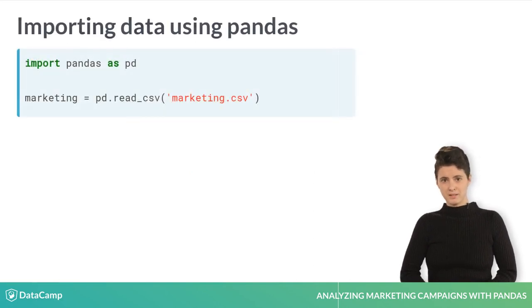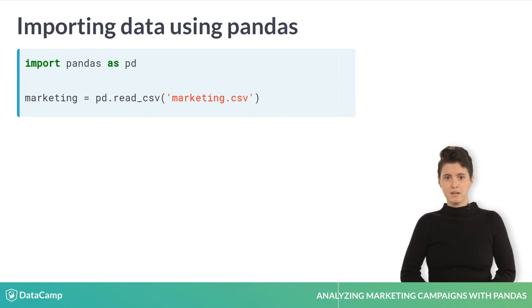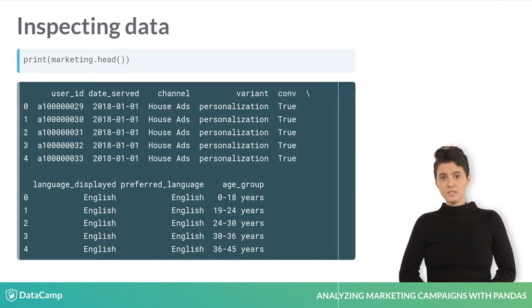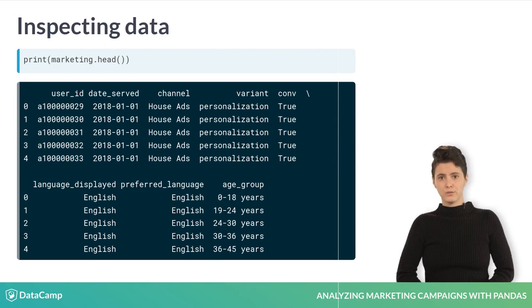To use Pandas, first import Pandas using the alias PD. To import a CSV file, you can use the read_csv function and pass the name of the file you want to import. Once you've imported your data, it is a good practice to examine its contents using the head method, which will return the first five rows of the data frame.